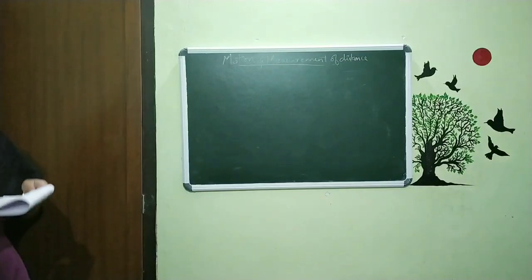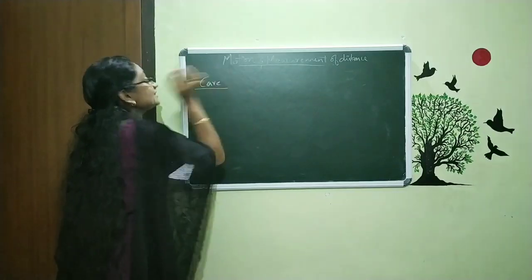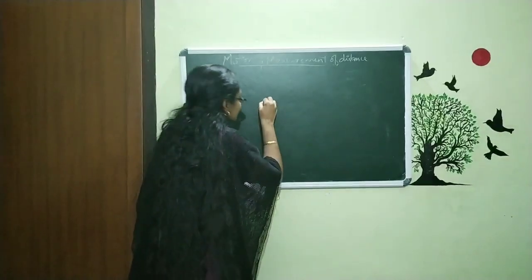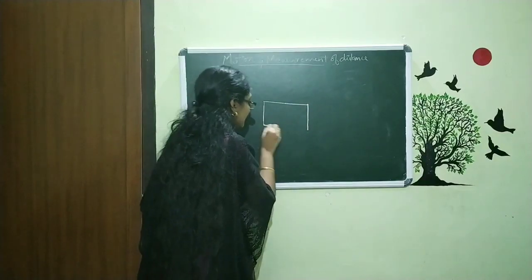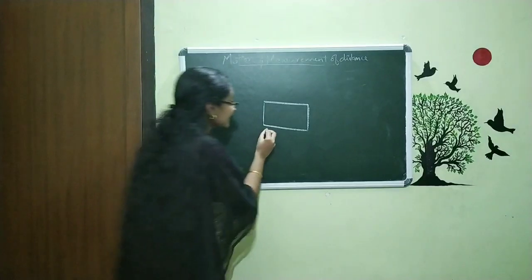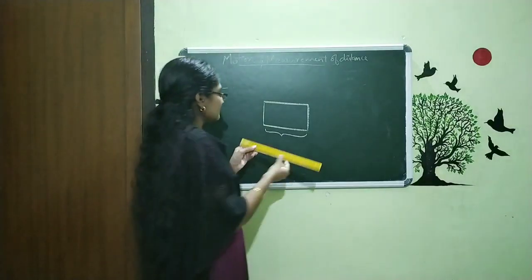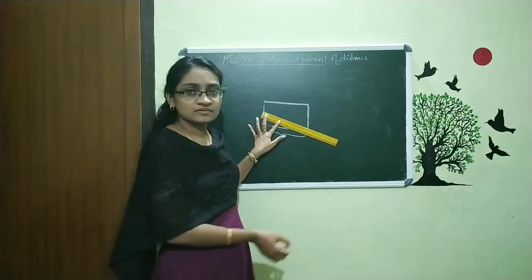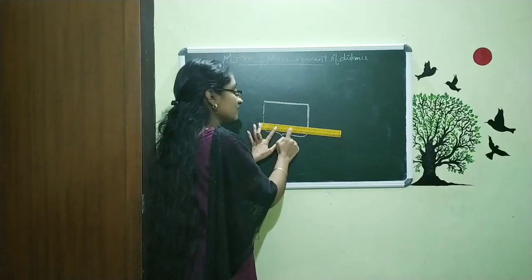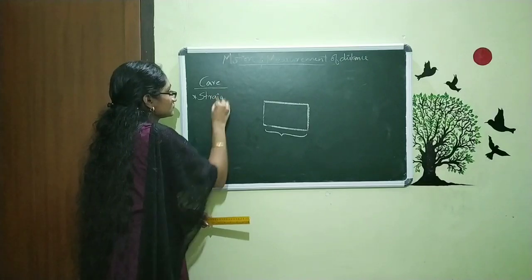Some sort of care must be taken while measuring the length. Here is one block and my aim is to find its length. Is it okay to put the scale at an angle? No, not at all. We want to put the scale straight to the object. That is the first point — we want to put the scale straight.